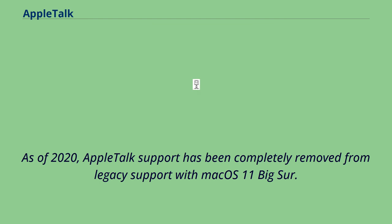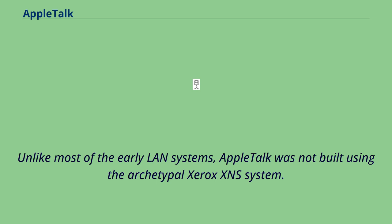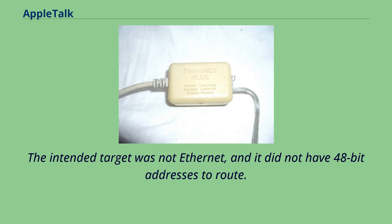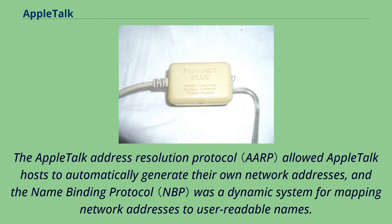The AppleTalk design rigorously followed the OSI model of protocol layering. Unlike most early LAN systems, AppleTalk was not built using the archetypal Xerox XNS system; the intended target was not Ethernet and it did not have 48-bit addresses to route. One key differentiation for AppleTalk was it contained two protocols aimed at making the system completely self-configuring: the AppleTalk Address Resolution Protocol, which allowed AppleTalk hosts to automatically generate their own network addresses, and the Name Binding Protocol, a dynamic system for mapping network addresses to user-readable names.